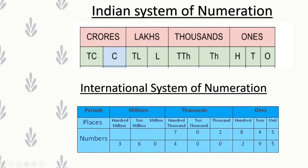Recap: In the Indian system, only the units period has 3 place values (1s, 10s, 100s); thousands period has thousands and ten thousands; lakh period has lakhs and ten lakhs; crores period has crores and ten crores. In the international system, each period — ones, thousands, millions, billions, trillions — has 3 place values. In Indian system, only 2 place values per period (except units); in international, every period has 3.